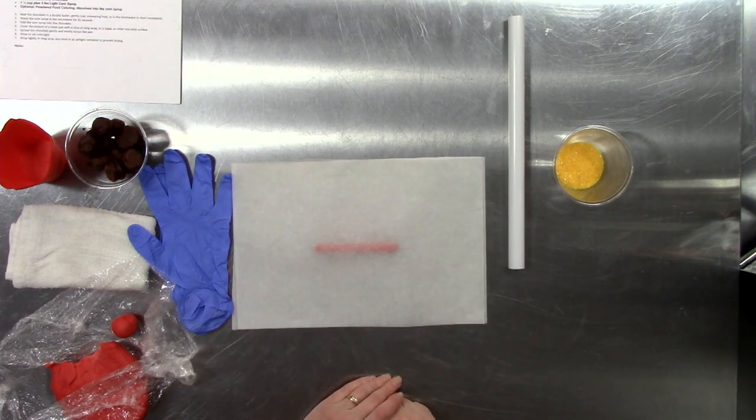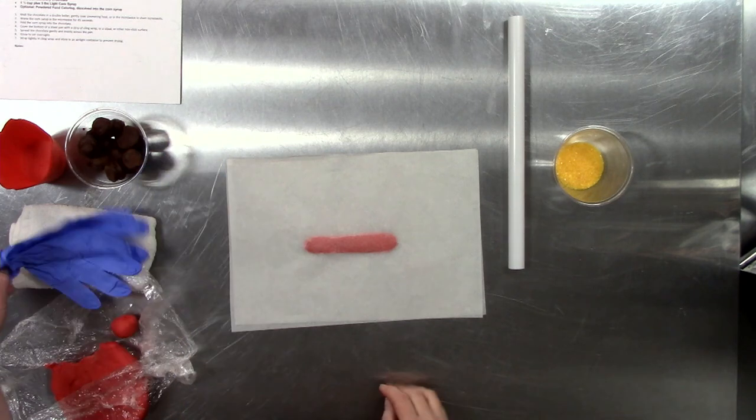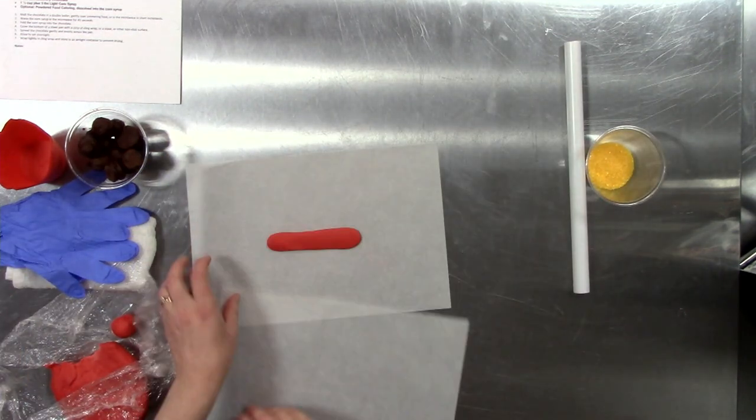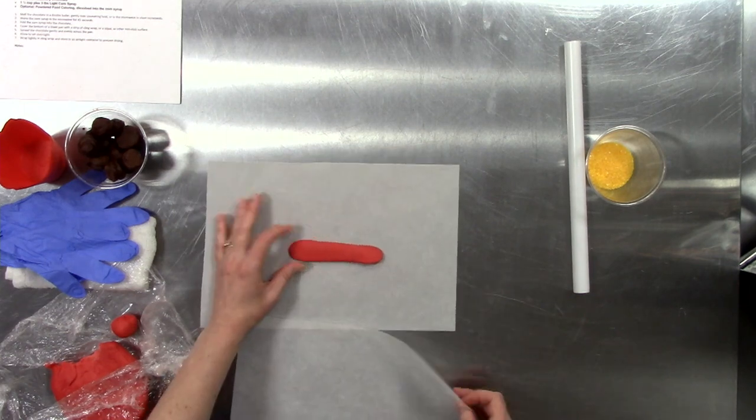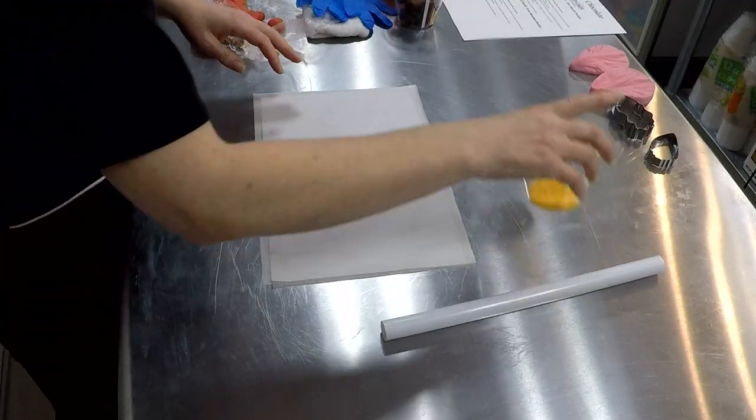I'm going to put another sheet of parchment paper on top and press it down flat ever so slightly just to make it easier to roll. Then I'm going to pull that parchment off and release it from the chocolate. This allows me to continue moving the chocolate versus making it stick permanently to that parchment paper.